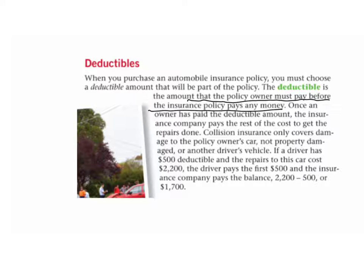Collision insurance only covers damage to the policy owner's car — not property damage or other drivers' vehicles. For example, if a driver has a $500 deductible and repairs to his car cost $2,200, the driver pays the first $500 and the insurance company pays the balance: $2,200 minus $500, or $1,700.